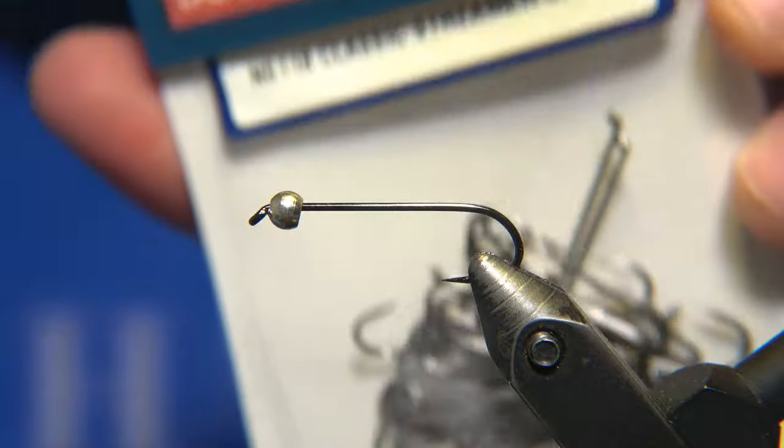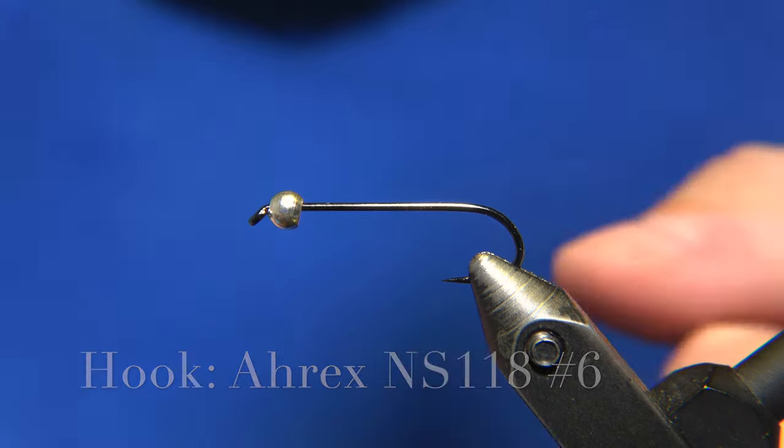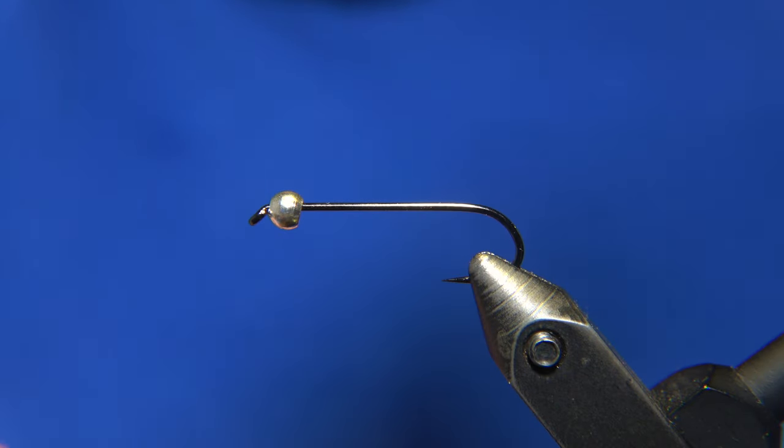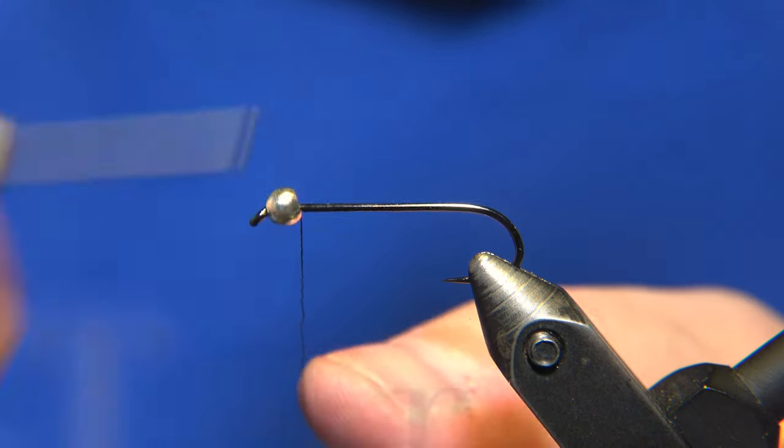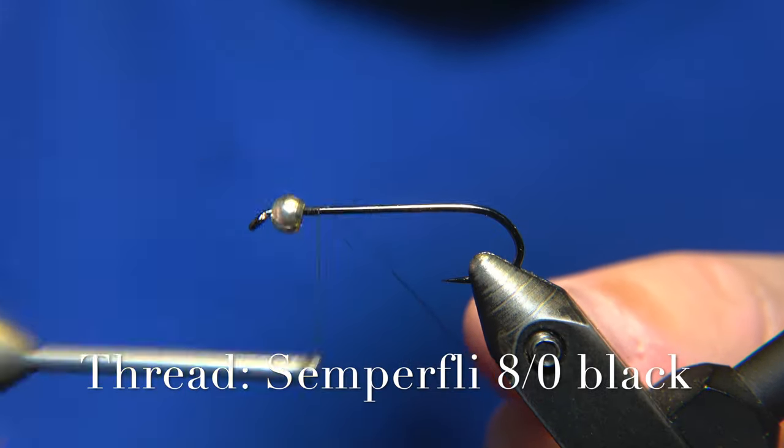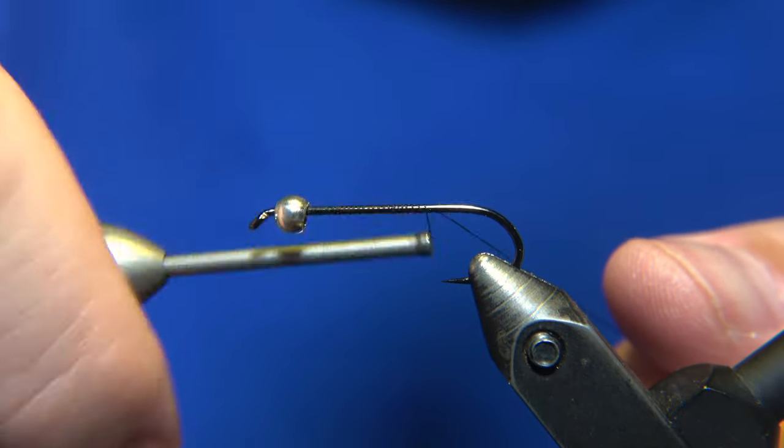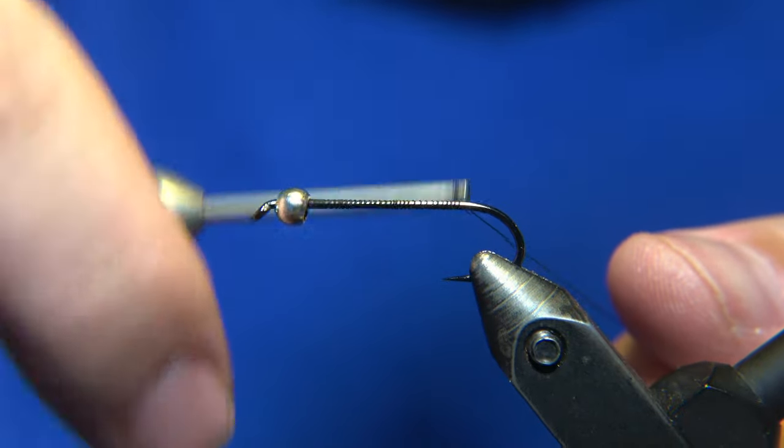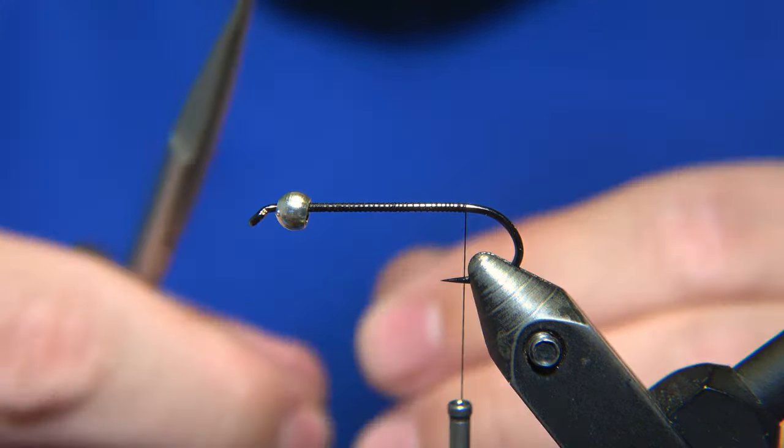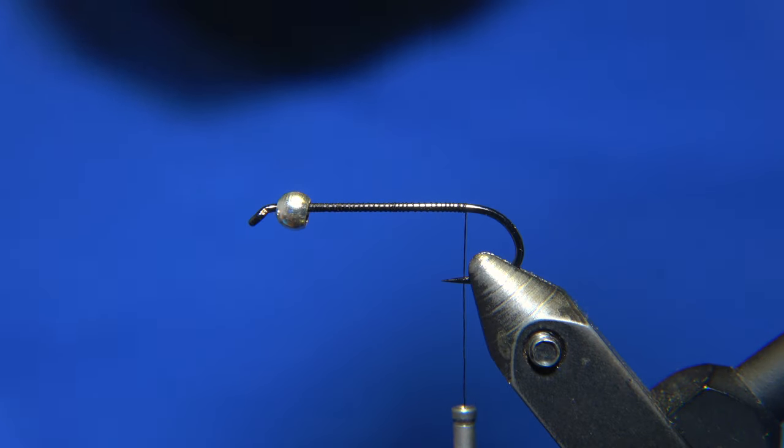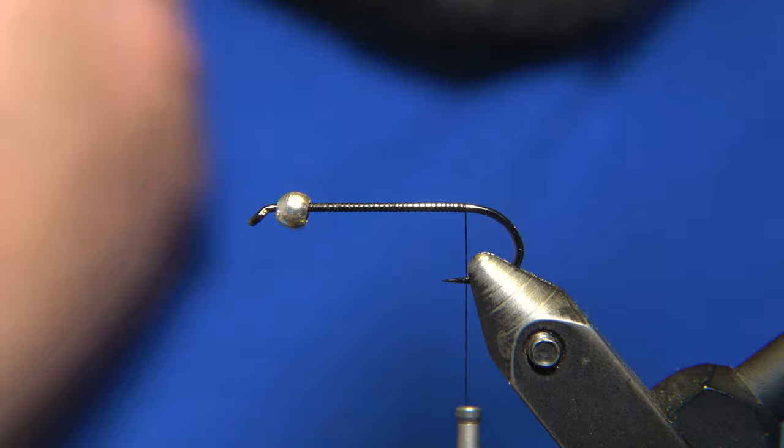As a hook, we are using a NS118 No.6, an RX hook, a classic streamer. I'm using an 8.0 classic waxed thread from Semperfly for this task. This is a relatively simple fly to tie as you will see. You will find the pattern in the video's descriptions below.